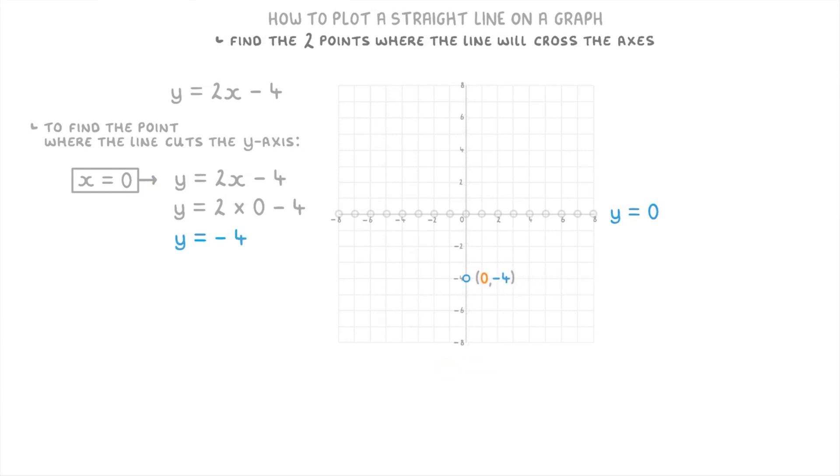Then to find the x-intercept, we just do the opposite and plug y = 0 into the equation. So 0 = 2x - 4, which we can rearrange to 4 = 2x, and then simplify to 2 = x. So the x-intercept is (2, 0).